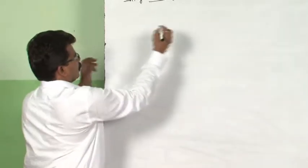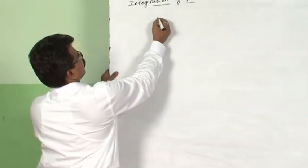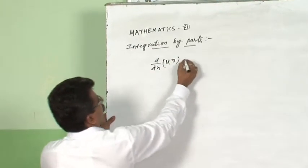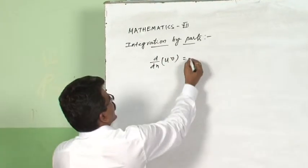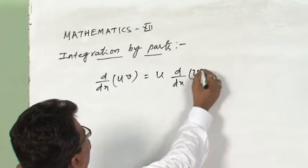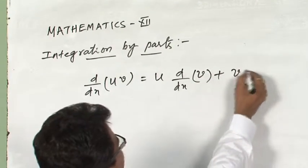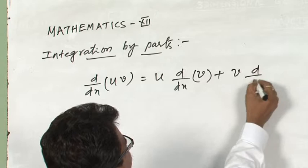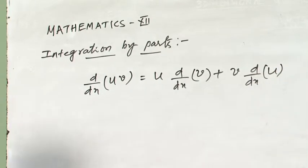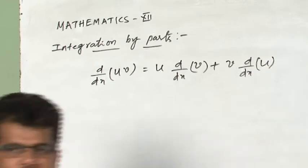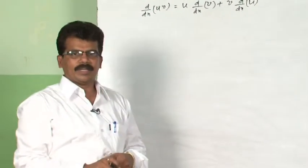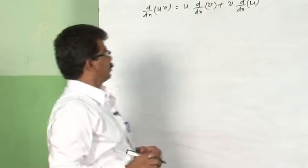We know that d/dx of u·v is equal to first function times derivative of second function plus second function times derivative of first function. This we are already familiar with from class 11. Now we will use this to find integration of two functions.